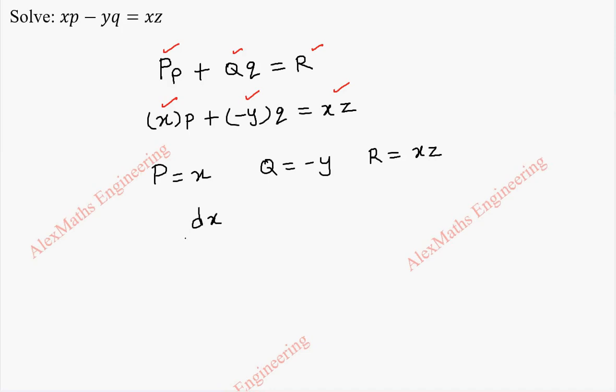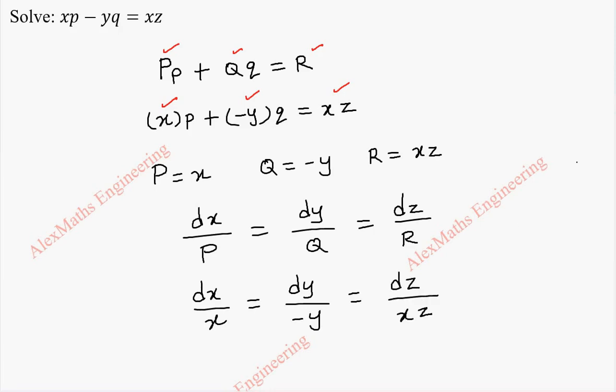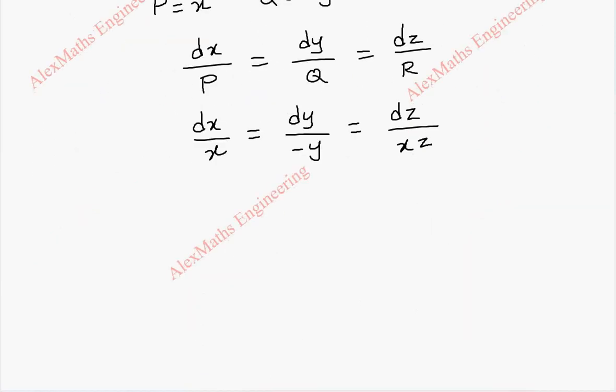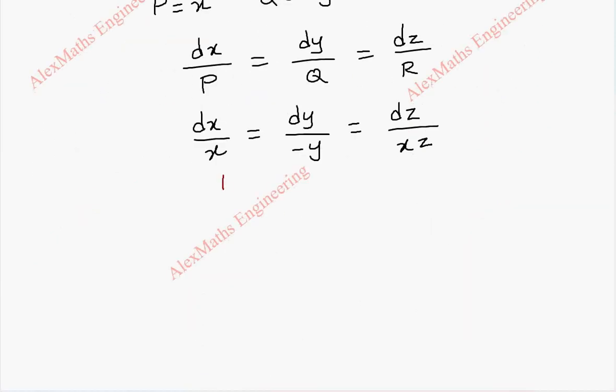Now, to get the solution, we have to solve dx by capital P equal to dy by capital Q equal to dz by capital R. Now, dx by x equal to dy by minus y equal to dz by xz. Now, taking first two terms, we are going to get a solution.